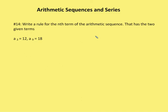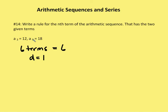The next problem asks us to write a rule for the nth term of the arithmetic sequence given two terms. I know that there are six terms between a sub three and a sub nine, since nine minus three equals six. The difference between a sub nine and a sub three is also six, so I find the common difference by dividing the difference between the two values by the number of terms between them.